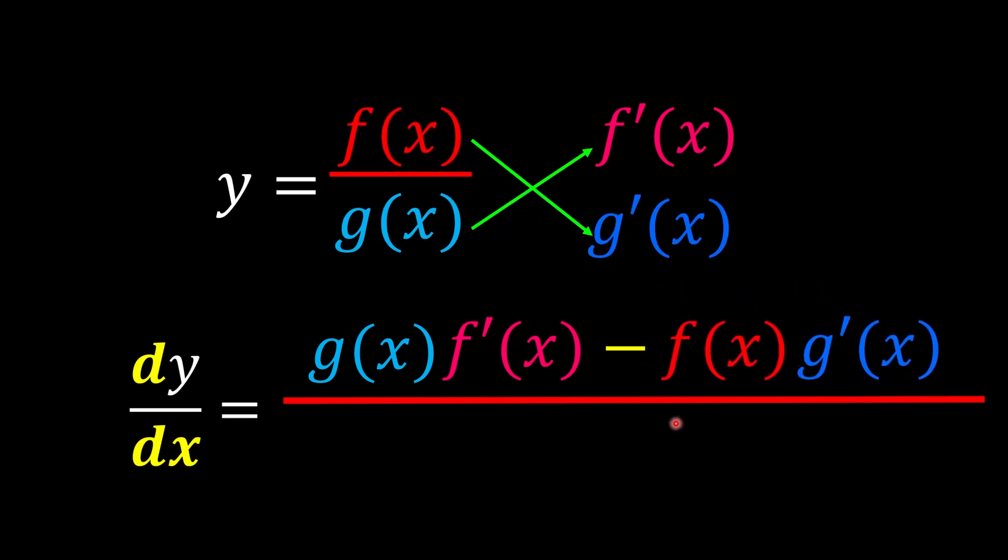After everything's settled on the numerator side, we're going to do something with the denominator. So the g(x), which is the bottom, is going to go down. But this one person cannot support everybody on top so heavy, right? So we're going to give it a little bit of power, so it's power of 2.